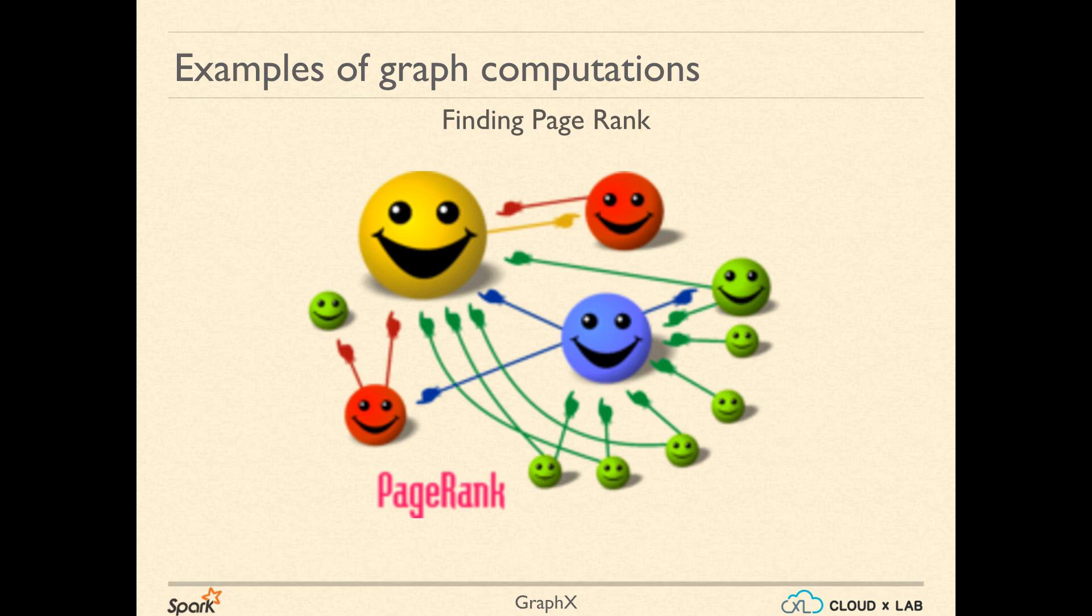When we search for some keywords, the search engine returns the result from its index. These results are ordered by relevance. Google computed the relevance based on how many pages are linking to a page. The more number of pages link to your website, the higher would be your rank. Also, the more important pages linked to your website, the rank of your page will be further higher. This kind of computation required keeping the relationship between various pages as a graph.